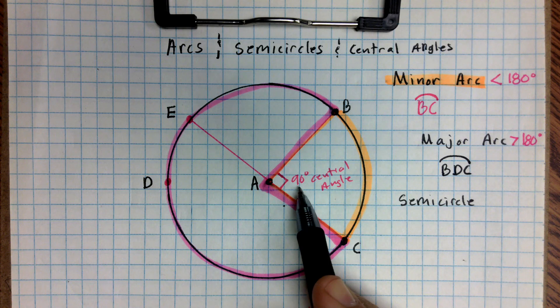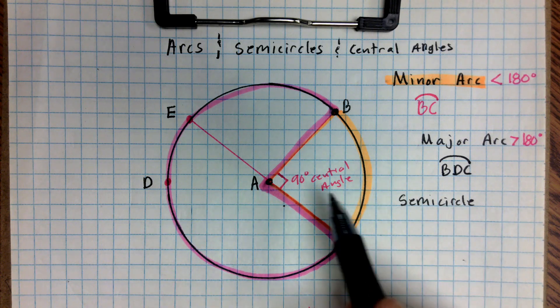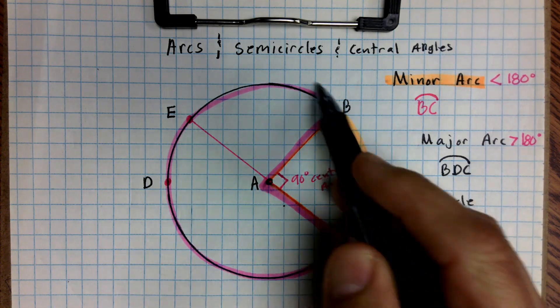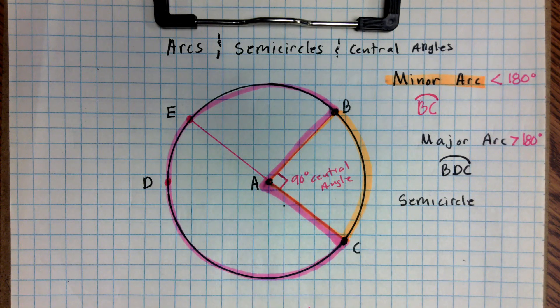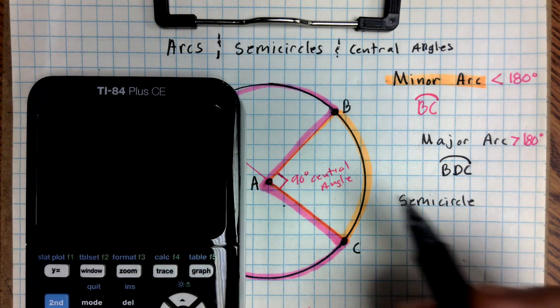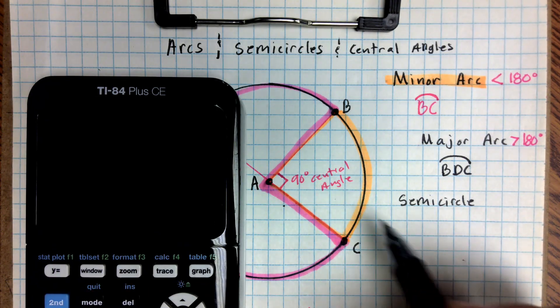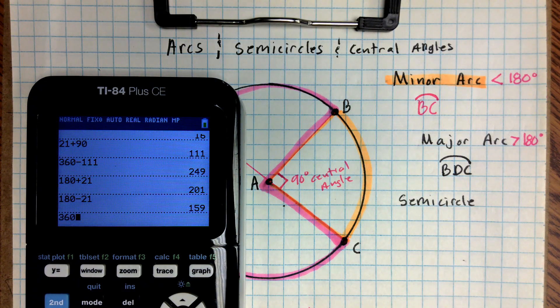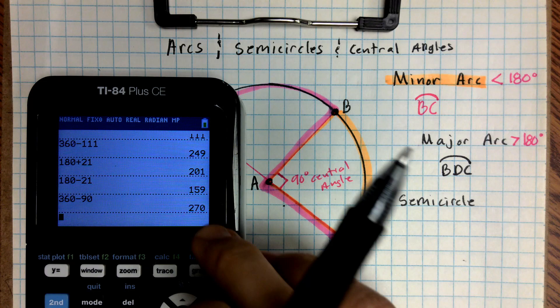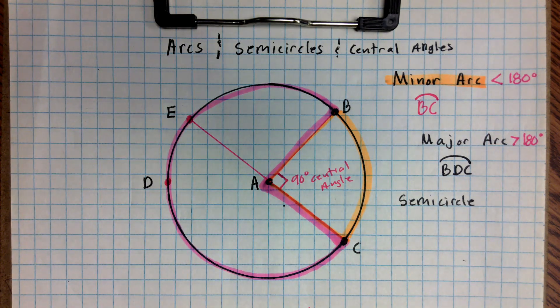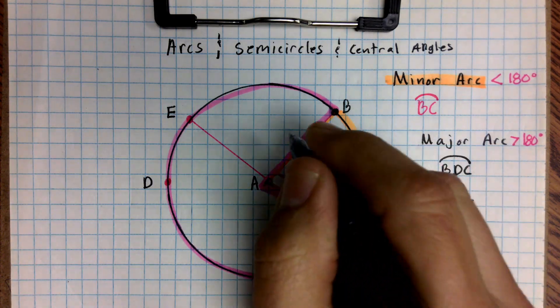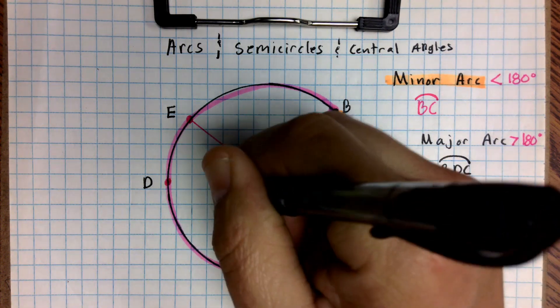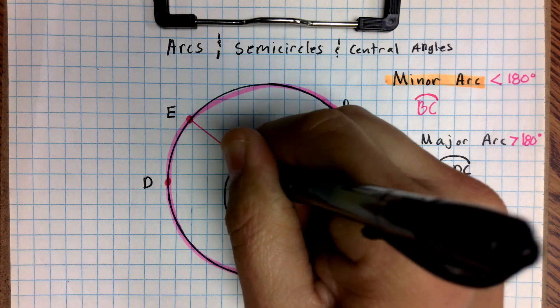And that's a major arc, and it is going to exceed 90 degrees. And if we wanted to find a measure of it, we could actually subtract. Notice that a whole circle, and I didn't mention this earlier, but a whole circle is 360 degrees. And if I know that this minor arc right here is 90 degrees, then what I could do is take 360 degrees and minus 90 from it, and it gives me 270 degrees.